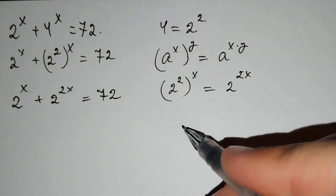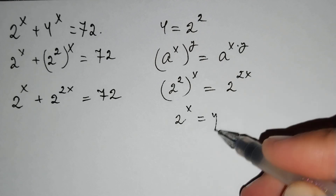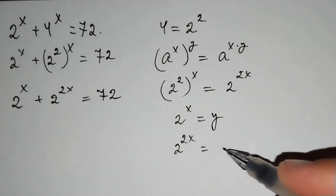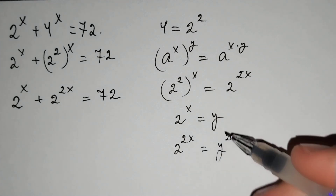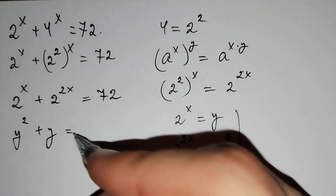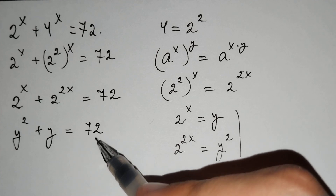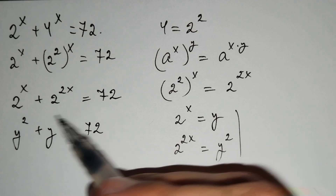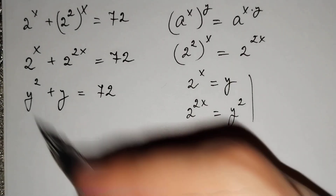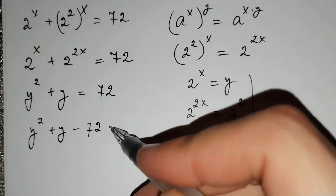Then, if we let y = 2^x, then 2^(2x) = y². Substituting, we get y² + y = 72, and moving 72 to the other side: y² + y − 72 = 0.